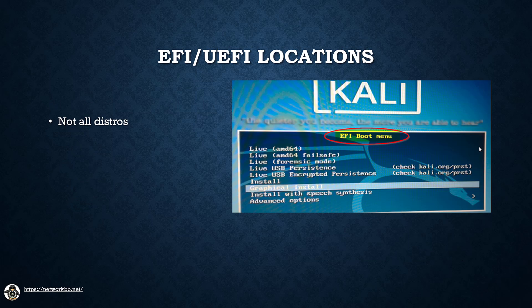Not all kernels support EFI or UEFI boot options, so be sure to check with your distribution to make sure. The ESP or EFI system partition utilizes the Microsoft FAT file system to store the bootloader programs. Typically this is mounted in the /boot/EFI folder and the bootloader files are usually stored using the .efi extension, for example the linux.efi file found at the /boot/EFI location in Linux and Kali Linux, as shown in this example on the screen.